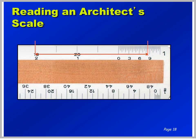Here's another example using the 1-inch scale. Reading from the zero going this direction, we have 1, 2 feet. Starting from the zero going this direction, we have 3, 6, 7, 8 and 1/2 inches. Final answer being 2 foot 8 and 1/2 inches.